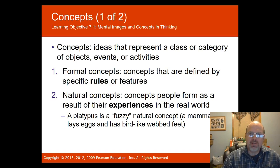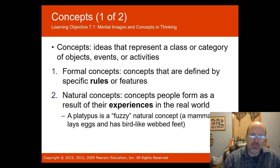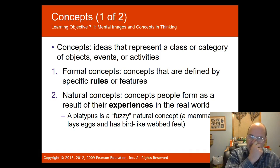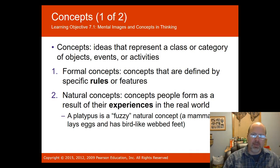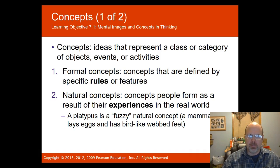Concepts are ideas that represent a class or category of objects, events, or activities. There are two forms of concepts. Formal concepts are defined by specific rules or features. Natural concepts form as a result of experiences in the real world — for instance, the concept of a platypus is a fuzzy natural concept.